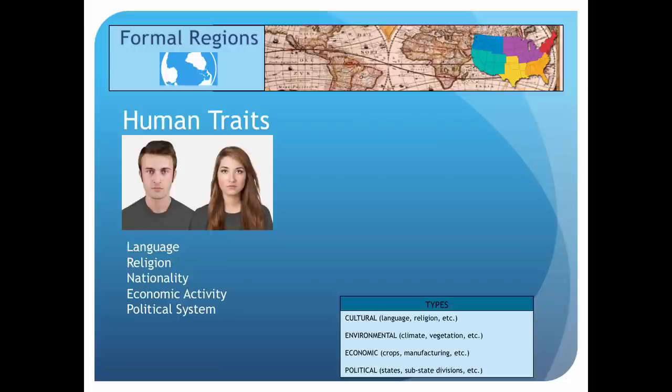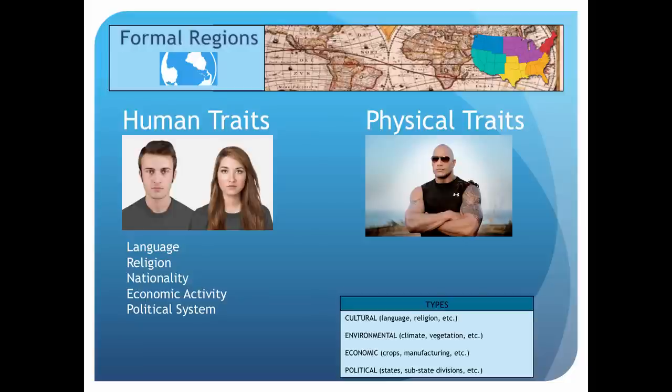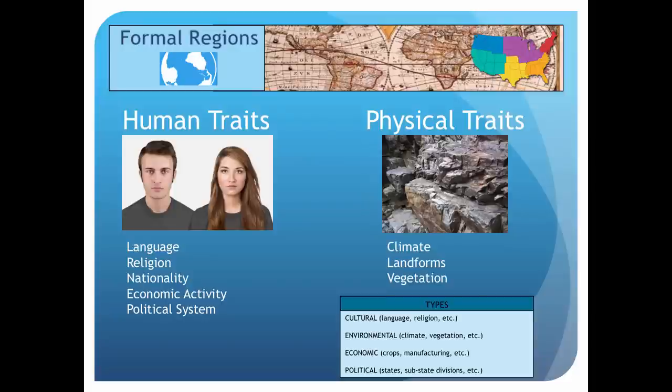Formal regions can also be defined by physical traits — that kind of rock — such as climate, landforms, or vegetation.